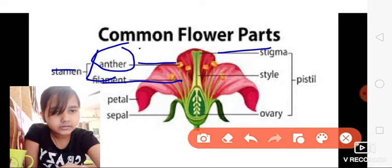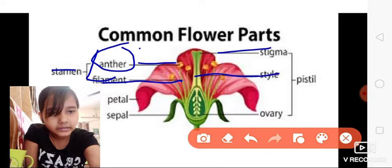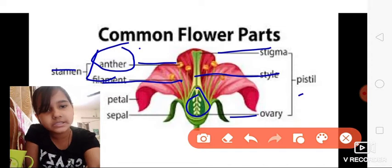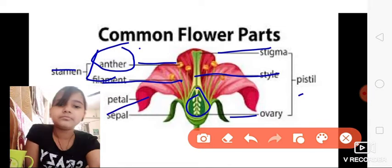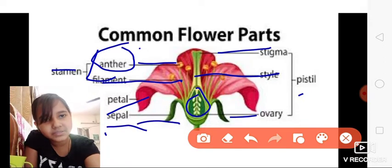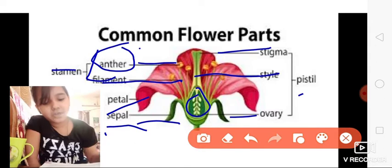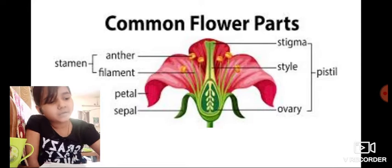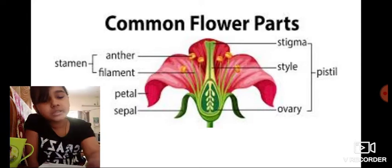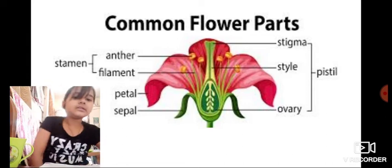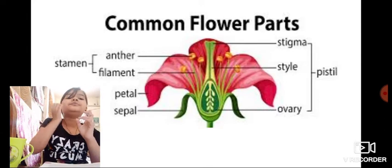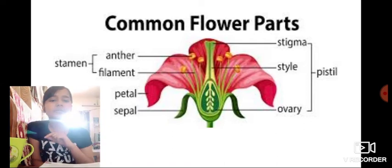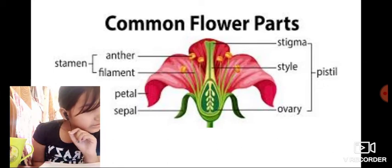You can see the stigma here, and also the style and the ovary. These three are the parts of the pistil. We will see what the pistil is. This is the petal — I will also tell you about petal and sepal. The sepal is this green structure, and the petal is the most beautiful part that we get attracted to in a flower. That line is called the thalamus.